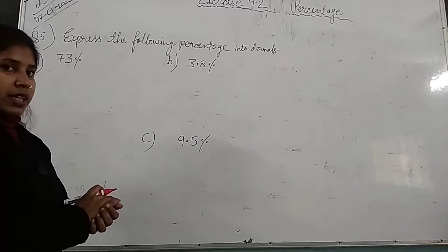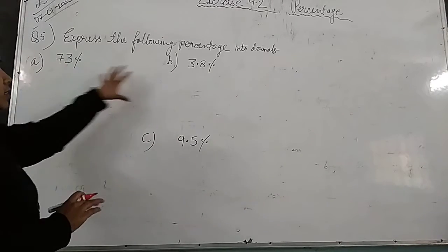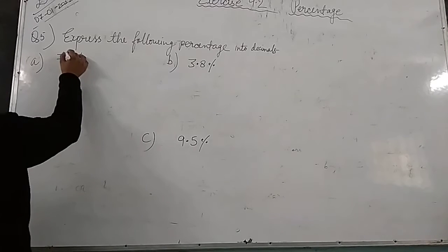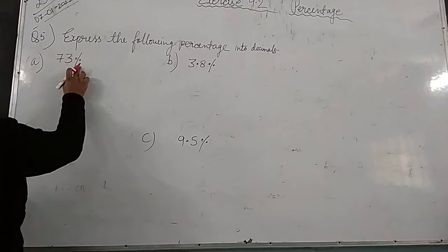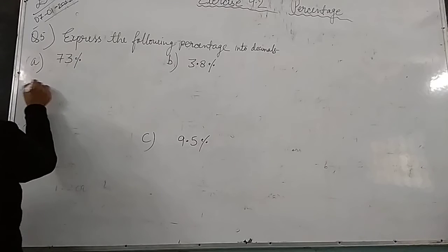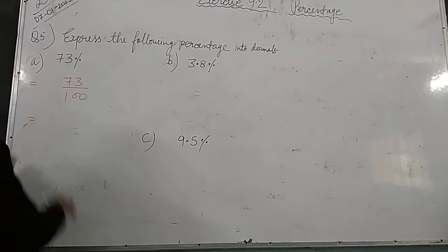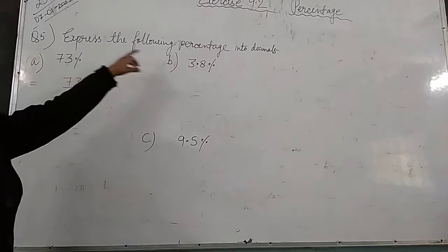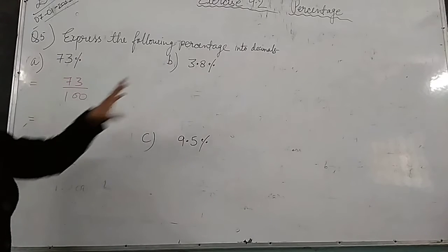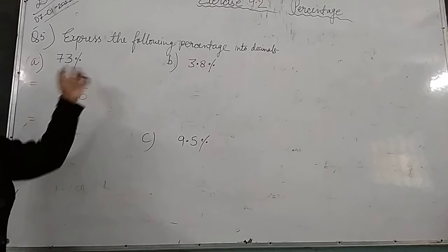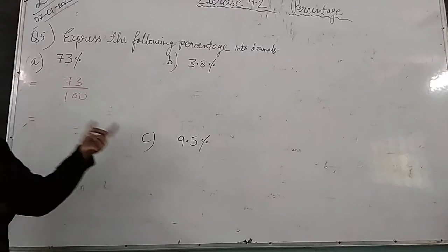So here the terms are given to you in percentage form. Now how we will solve this: here is 73%, so we will write this as 73 upon 100. Now what we have to do? Convert into decimal. And you all know when the denominator has decimal form, we convert it.